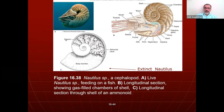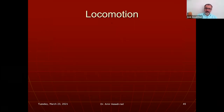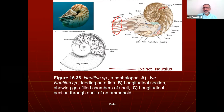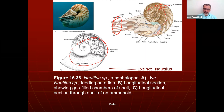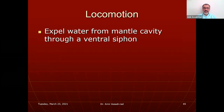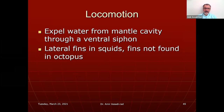Here is the nautilus. The shell has septa and the chambers between septa are connected by siphuncles. You can see the tentacles and the septum in the diagram. These are also ancient body chambers of extinct nautilus species.